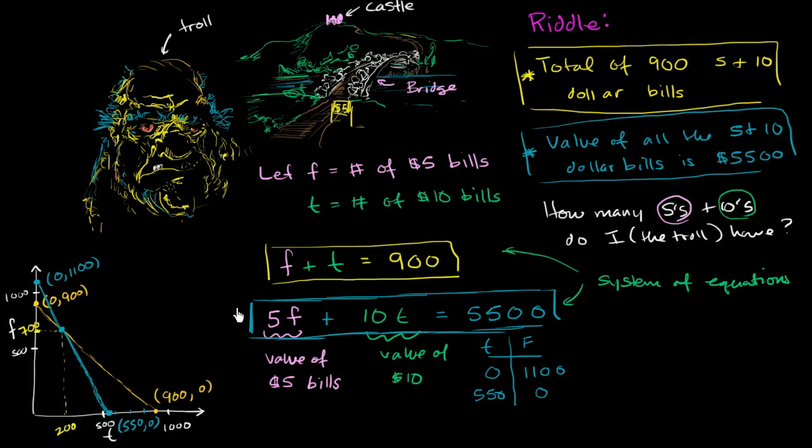700 plus 200 is equal to 900. And if I have 700 fives, 5 times 700 is going to be the value of the fives, which is $3,500. And then 10 times 200, which is $2,000, is the value of the tens. And if you add up the two values, you indeed get to $5,500. So this looks right.